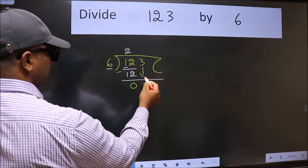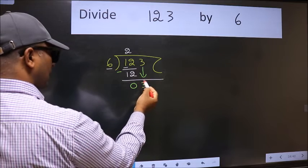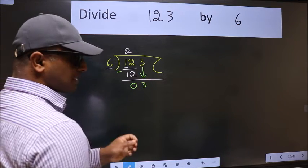After this, bring down the next number. So 3 down. After this step, the mistake happens.